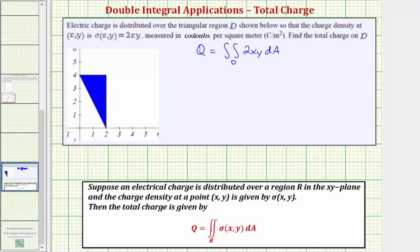Now let's focus on D, the region of integration. Notice how the three corner points of this triangular region would be the points two comma zero, two comma four, and zero comma four.